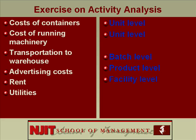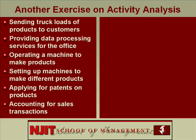Rent — rent is facility level. Utilities — this is also a facility level activity because it's common to all products. Now let's do this exercise: describe the following activities as producing unit level, batch level, product level, or facility cost. Stop and try it. When you're done, I'll give you the answers and we'll continue.